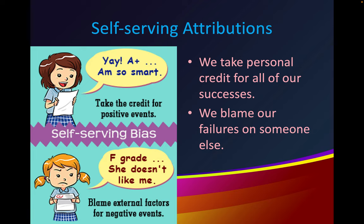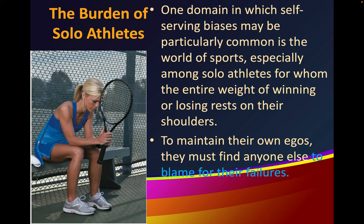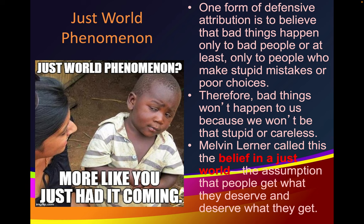We take personal credit for all of our successes and blame our failures on someone else — we take credit for positive events and blame external factors for negative events. This self-serving bias may be particularly common in sports, especially among solo athletes for whom the entire weight of winning or losing rests on their shoulders. One form of defensive attribution is to believe that bad things happen only to bad people or those who make stupid mistakes. Melvin Lerner called this a belief in a just world — the assumption that people get what they deserve and deserve what they get.